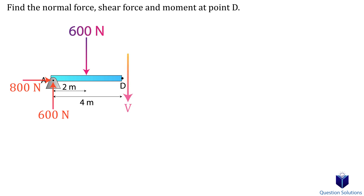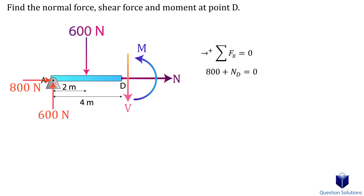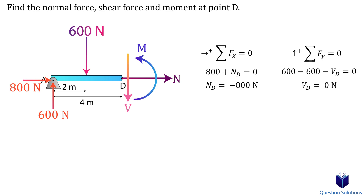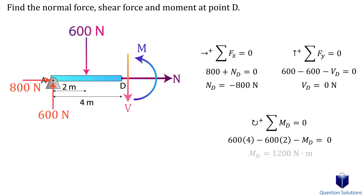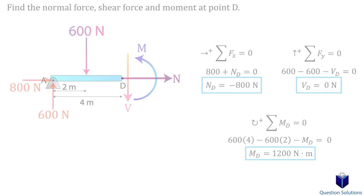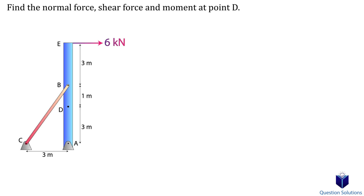At the cut we have the shear force, normal force, and moment at D. Writing an equation of equilibrium for the x-axis forces gives the normal force — we get a negative value, meaning the normal force actually faces to the left. Next, writing an equation of equilibrium for the y-axis forces gives the shear force. Lastly, writing a moment equation about point D gives us the moment, and those are our answers.